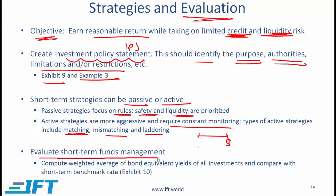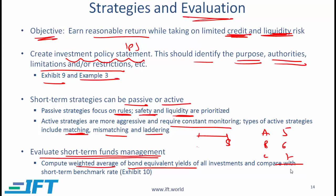How do we evaluate short-term funds management? Say you are an analyst and you want to evaluate how well the corporate finance function of a company is managing short-term funds. You need to look at the various investments being made and compute the weighted average of the investments. In terms of the yield, you should use bond equivalent yields because that is how most investments are quoted. If a company makes three investments A, B, and C with bond equivalent yields of 5%, 6%, and 7%, and all three are equally weighted, then you simply have a weighted average of 6%.